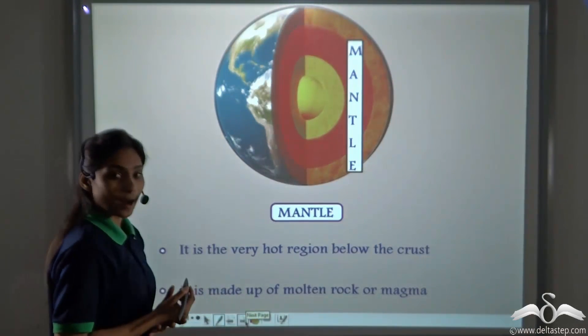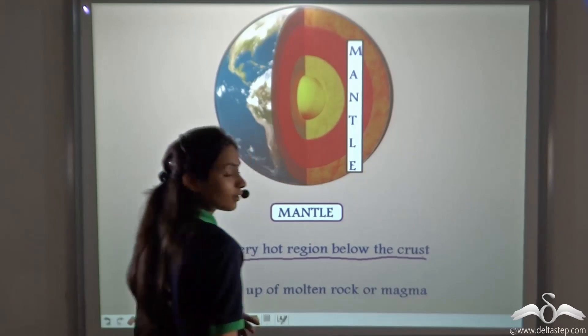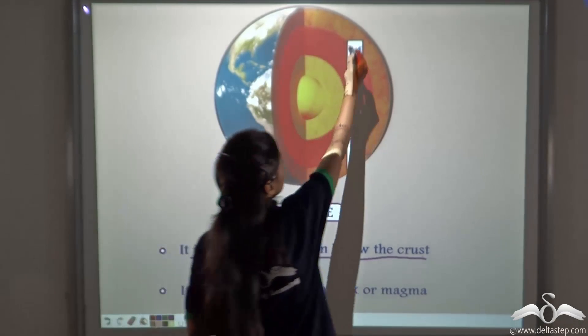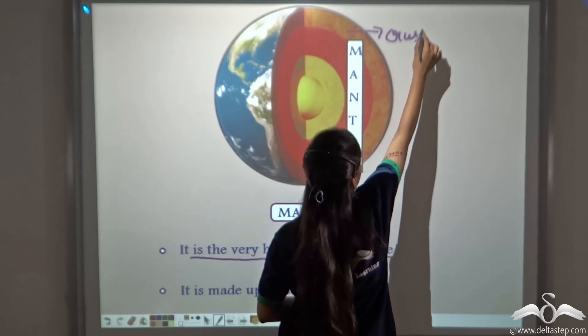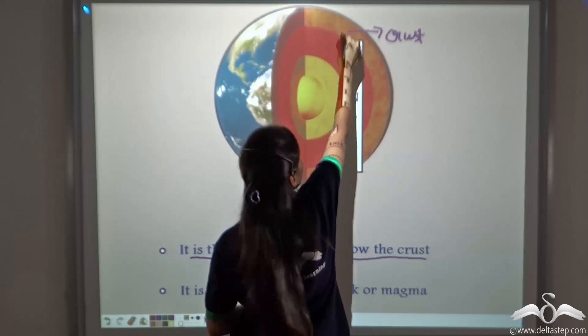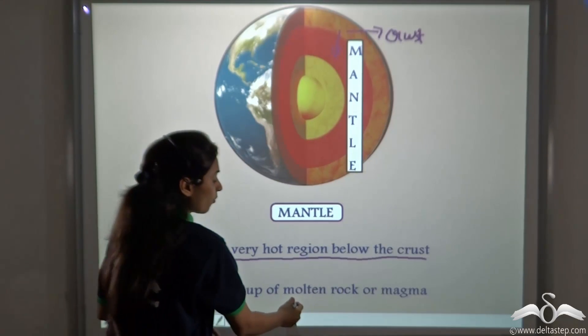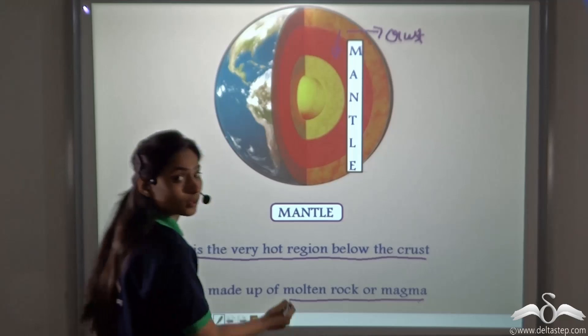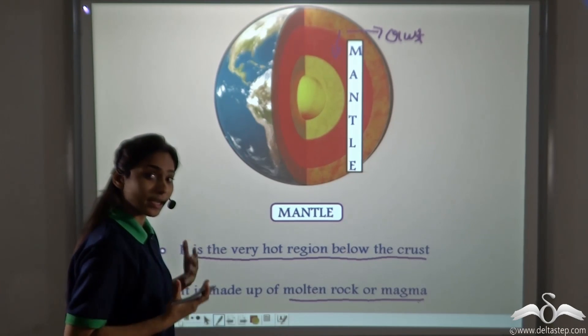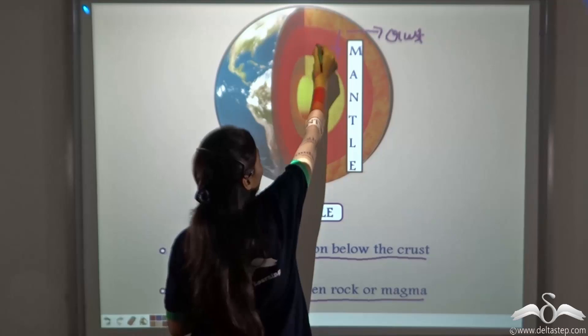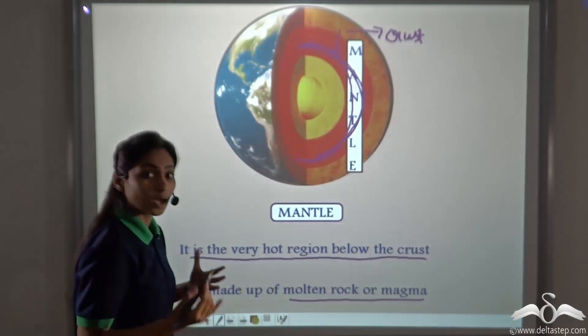Now let's study about mantle. Mantle is the very hot region below the crust. Now let's see where it lies. You can say that this is the crust of the earth. And where does mantle lie? It lies just below the crust. It is made up of molten rock or magma. This molten rock or magma comes out during volcanic eruptions. So this mantle is full of molten rock, that is rocks in liquid state.